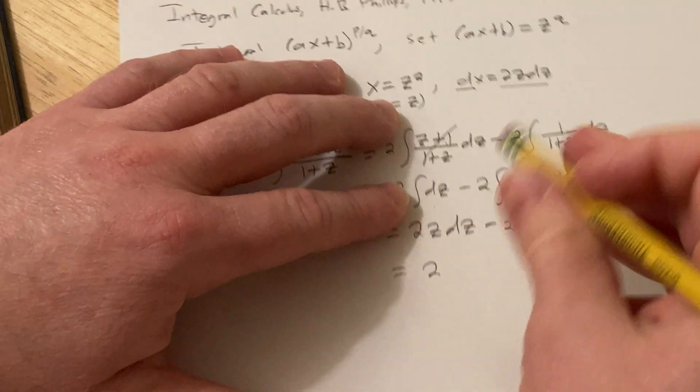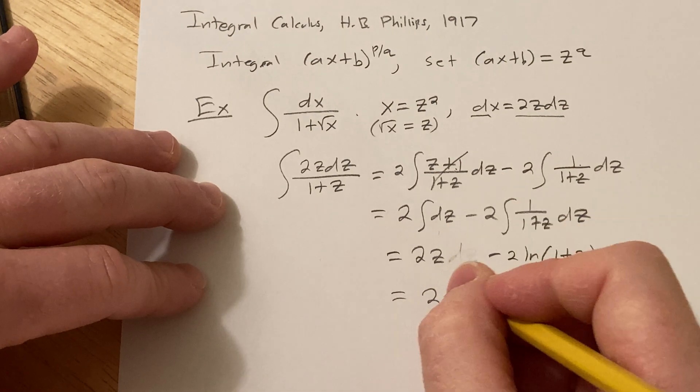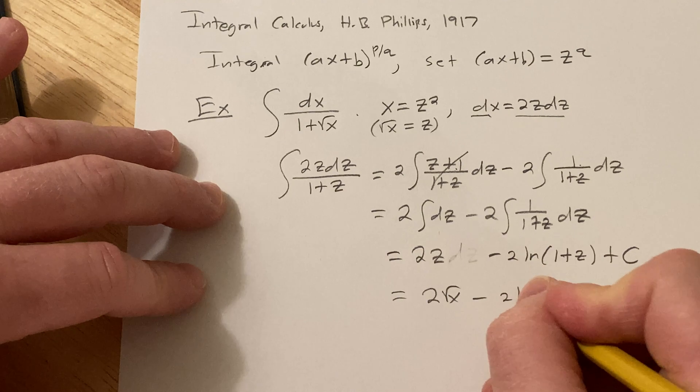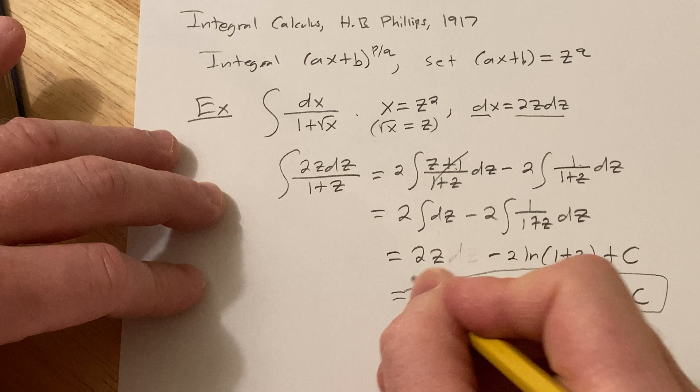Oops, mistake here. This is just 2Z. There's no dz. This is 2 square root of X minus 2 ln 1 plus square root of X plus C. And that would be the result.